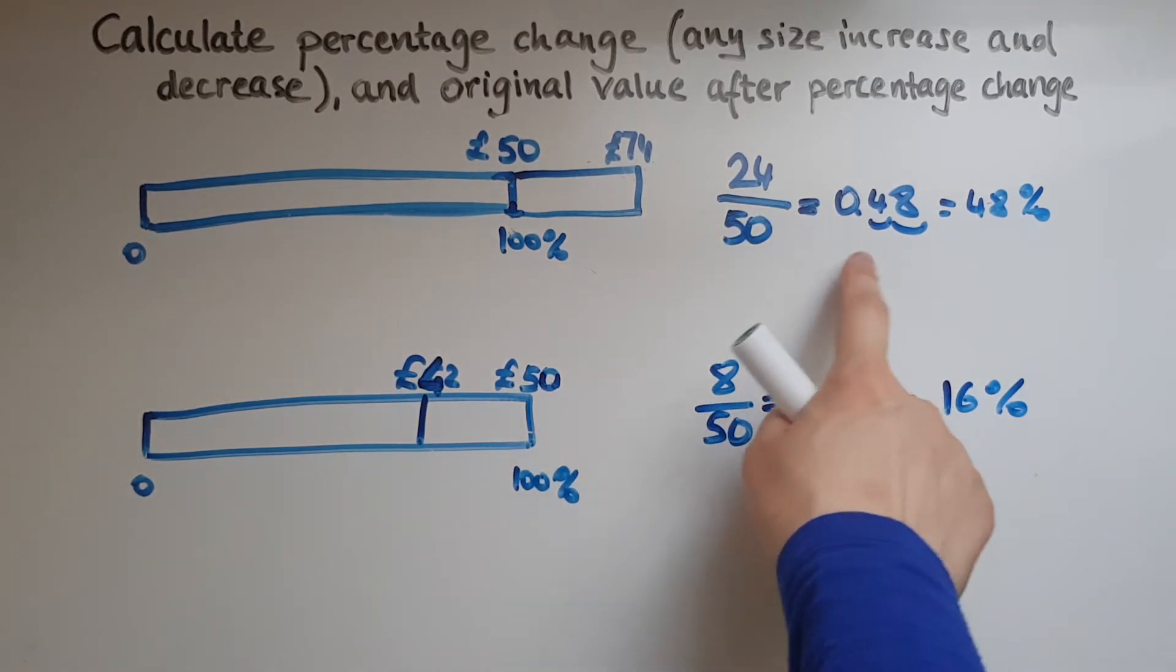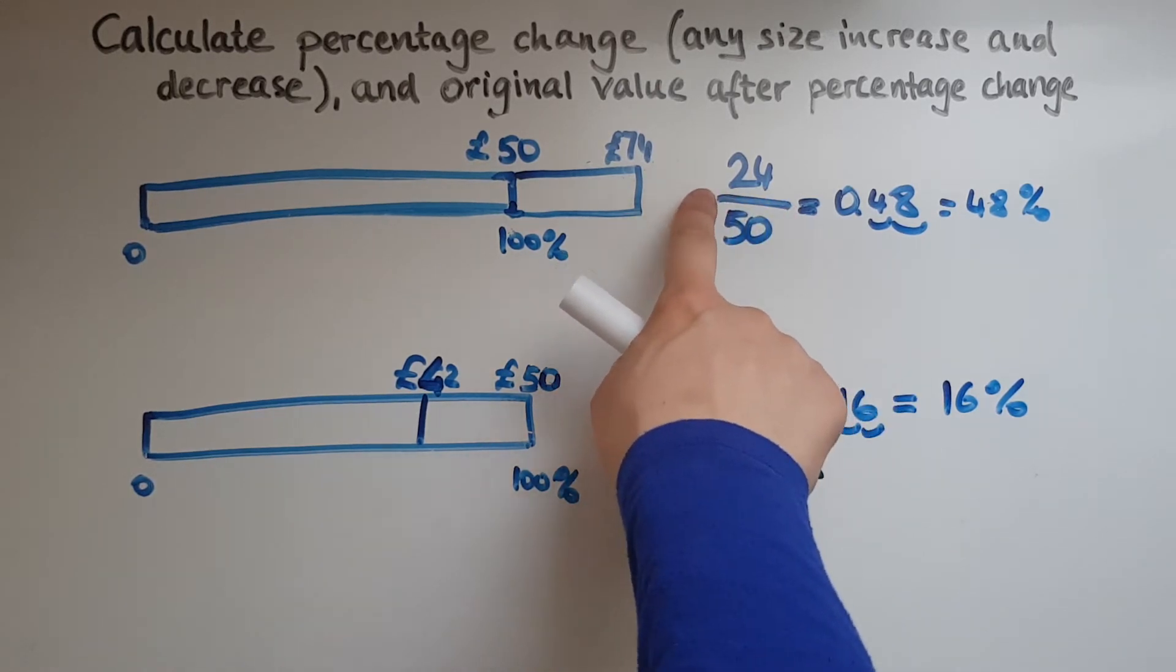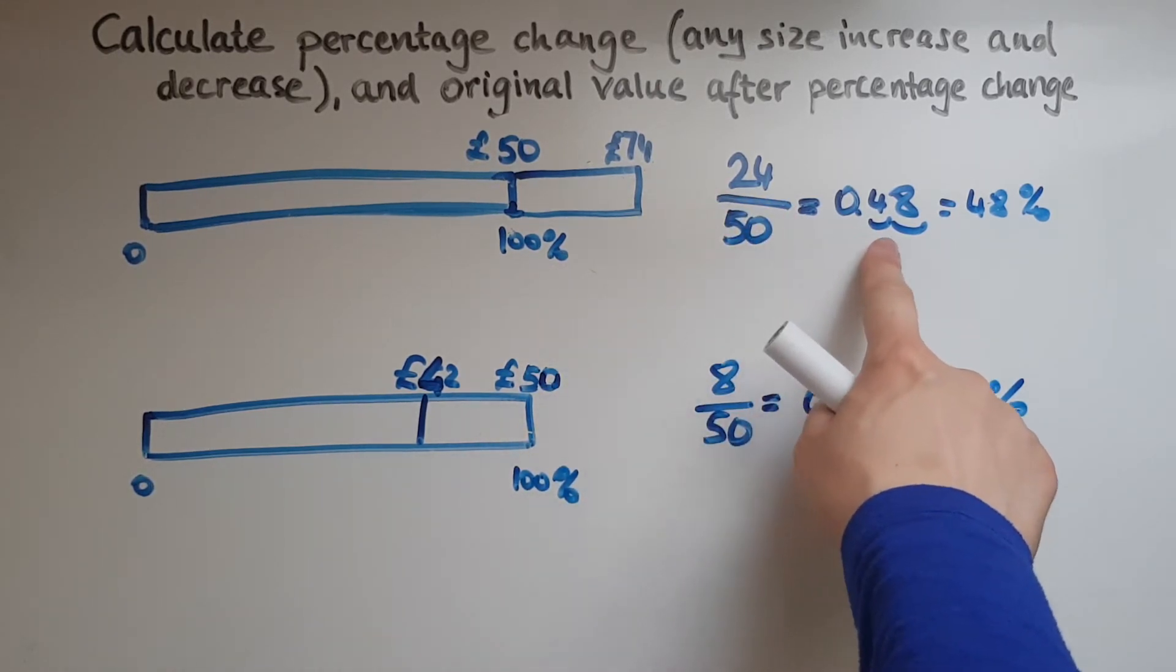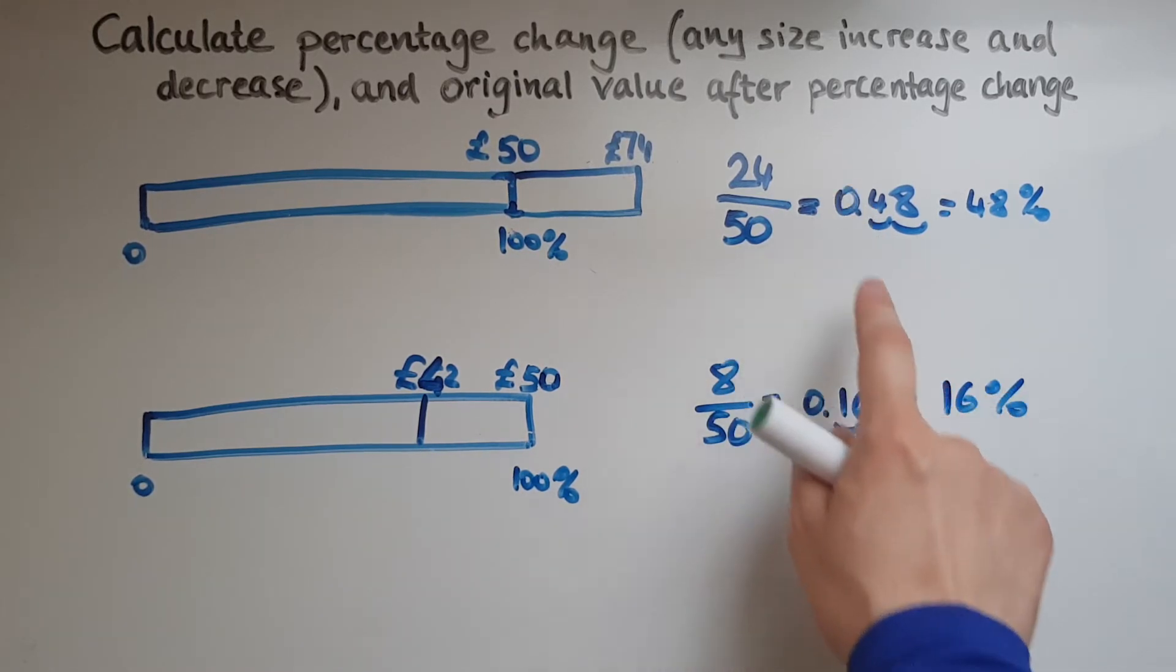And that means of course into a decimal because this line here means division. So 24 divided by 50 gives us 0.48 and that is 48%. Just like 48 pence would be notated with a pound sign in front.